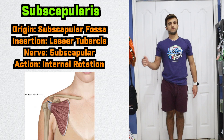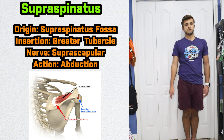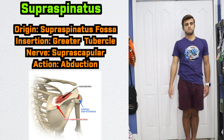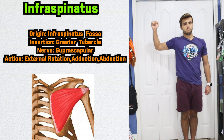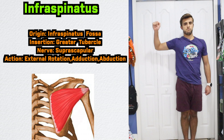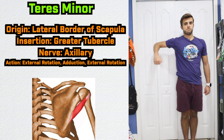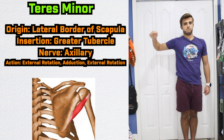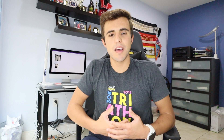Anteriorly, we have the subscapularis, which is the main internal rotator out of all the rotator cuffs. As we move superiorly, we have the supraspinatus, which is responsible for abduction. Inferior to that, we have the infraspinatus, which is mainly responsible for external rotation but also carries out some adduction and abduction. Lastly, we have the teres minor, which is responsible for external rotation, adduction, and retroversion.